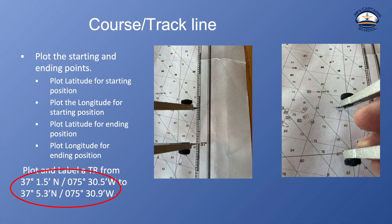So first thing I want to do, plot the starting and ending points. So I'm going to plot the latitude for the starting position, the longitude for the starting position, plot the latitude for the ending position, plot the longitude for the ending position. And our positions here, as a reminder, 37 degrees 1.5 minutes north, 75 degrees 30.5 minutes west. And then our ending point, 37 degrees 5.3 minutes north, 75 degrees 30.9 minutes west.